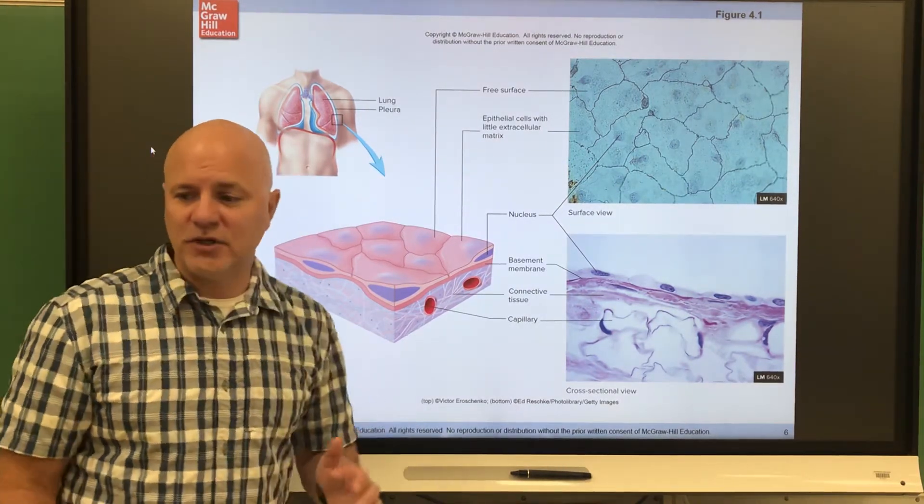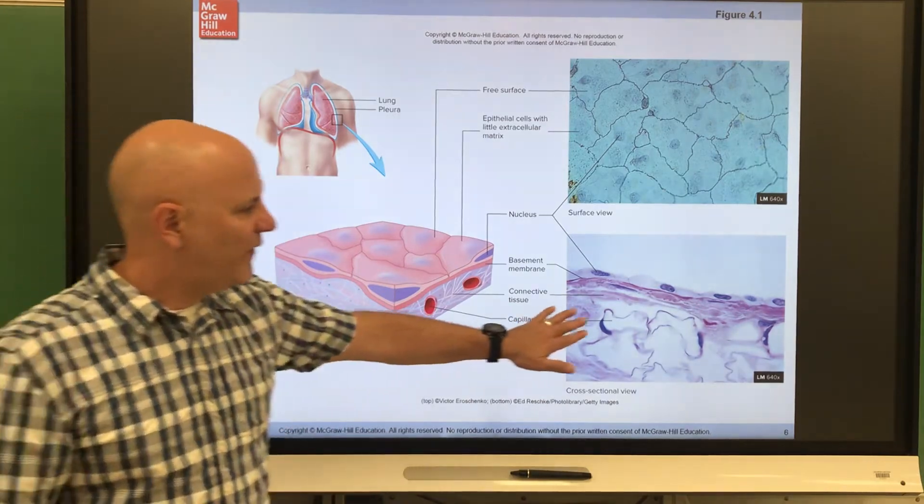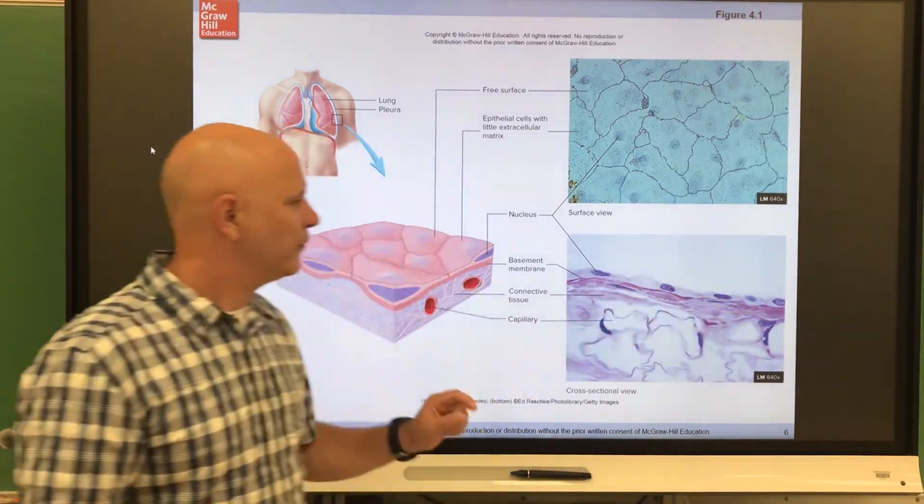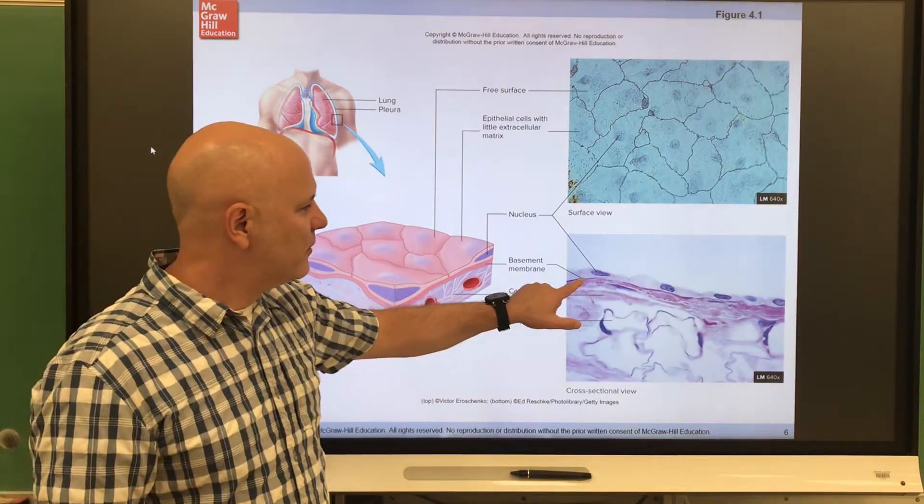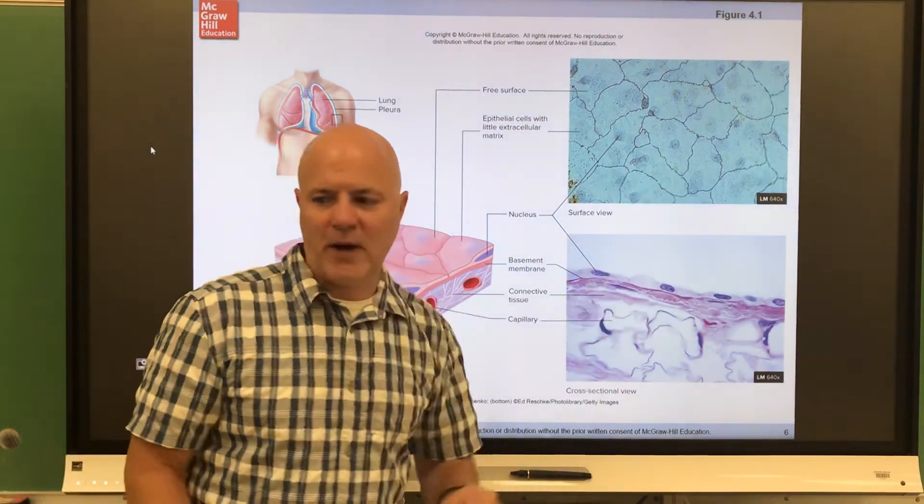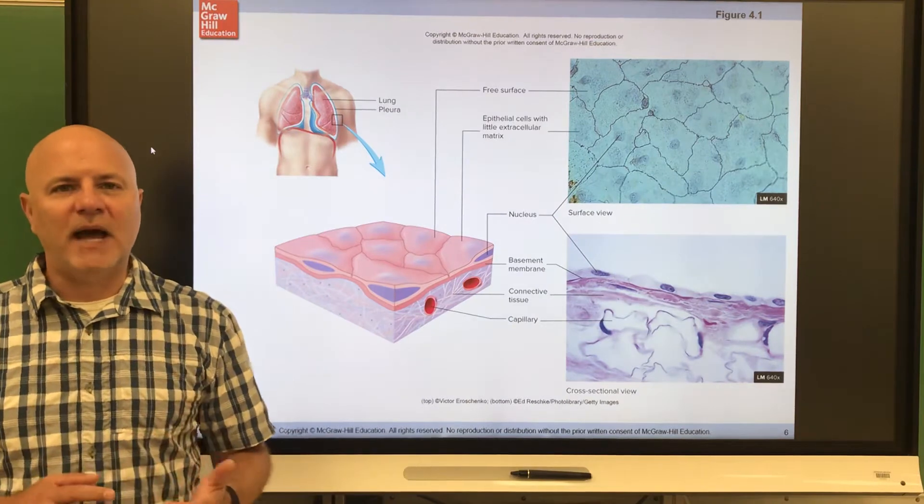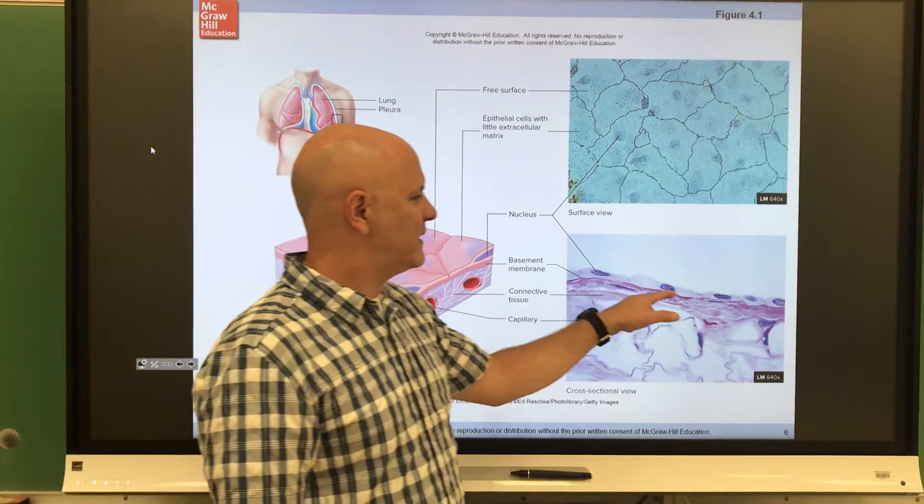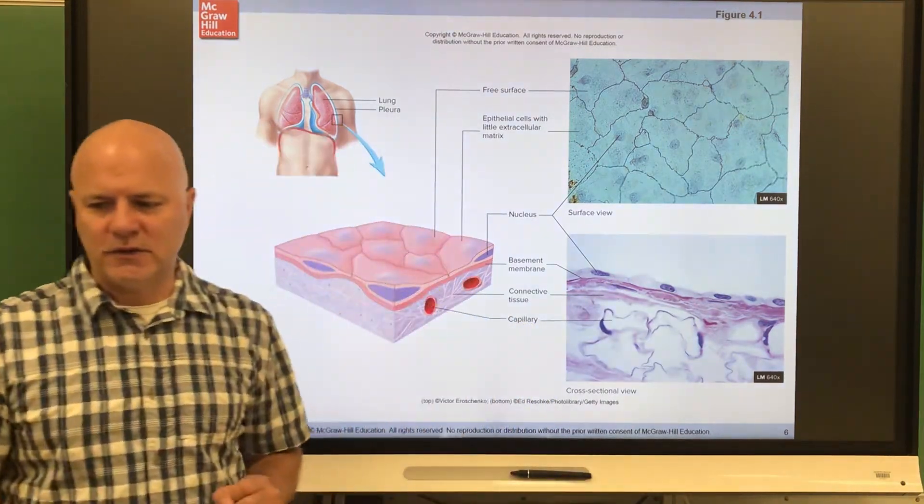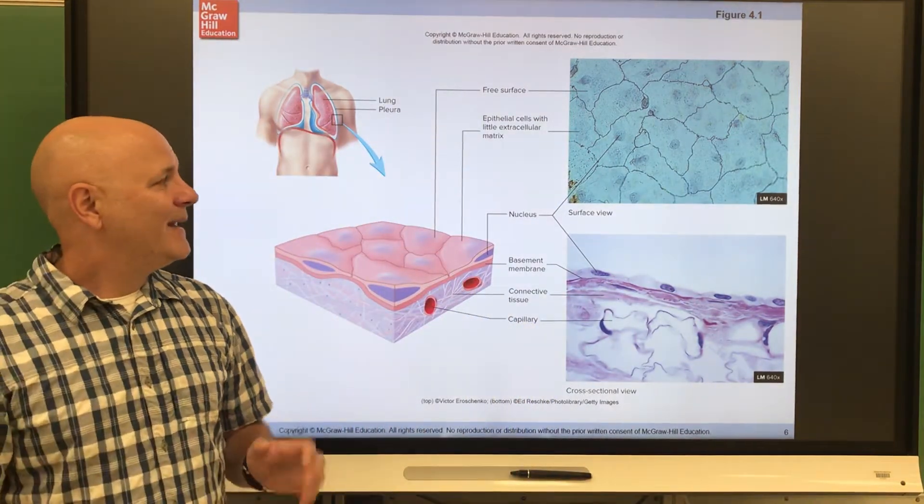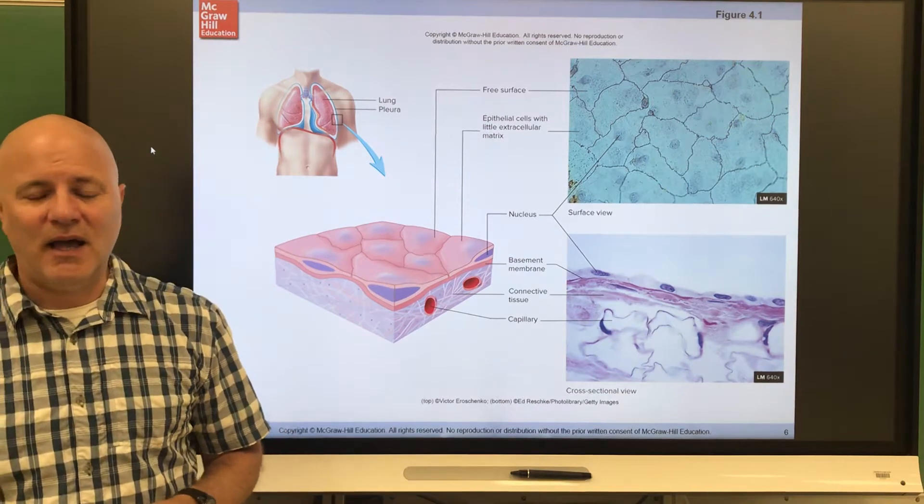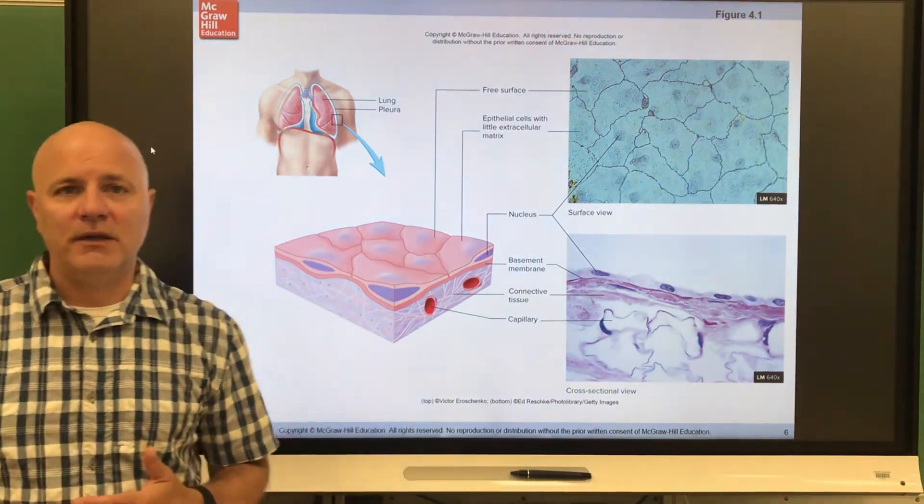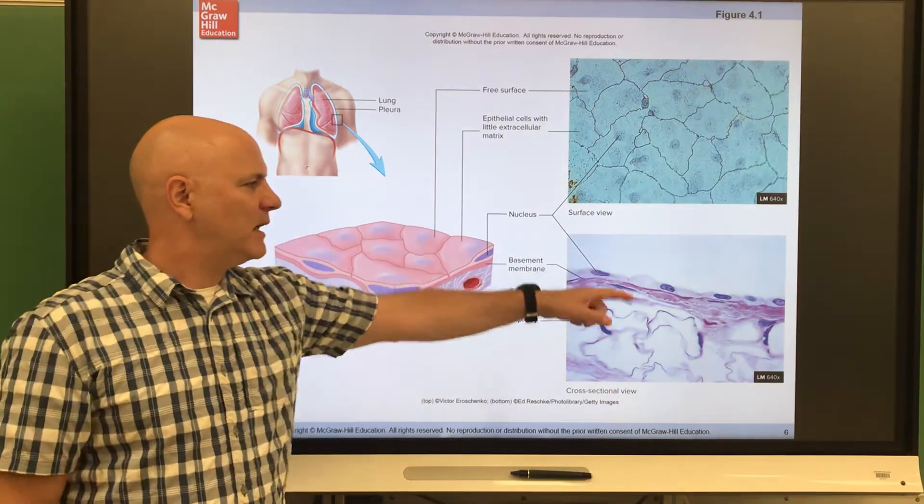Next, they're supported by connective tissue. So we find connective tissue down here below that epithelial tissue. And we also find this other membrane here called a basement membrane. So this is a layer of non-living material that anchors epithelial tissue to connective tissue. You can kind of think of it, it's kind of like a glue between those two layers. Next is that epithelial tissue is avascular. Lacks blood vessels. So there's no blood vessels in epithelial tissue.